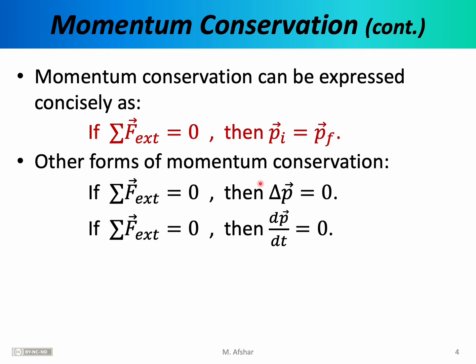Sometimes when we want to be a little more mathematically sophisticated, we write it as dp/dt equals zero. Here we're saying the derivative of momentum with respect to time is zero. When the derivative of something equals zero, that thing is not changing — specifically, momentum is not changing with respect to time. So this is just another way of saying momentum is conserved. You'll see all three versions of the principle of momentum conservation, and you need to be comfortable using all three — they're all essentially stating the same thing.